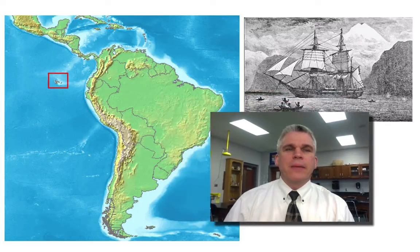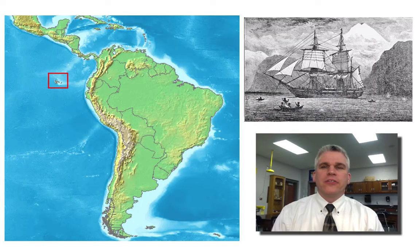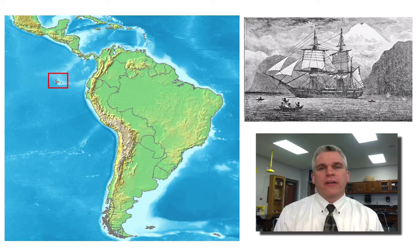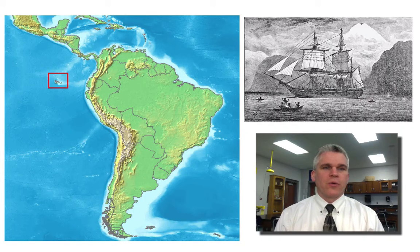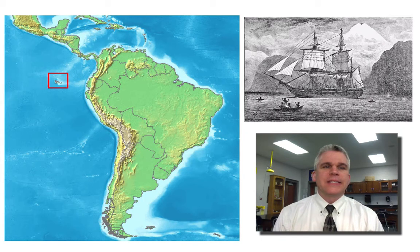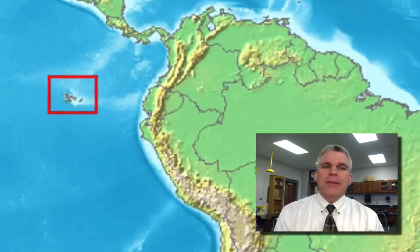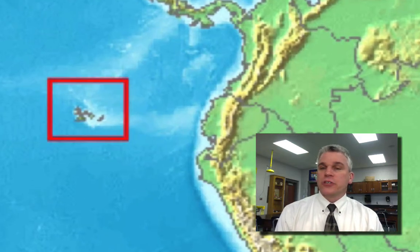Now, remember that Darwin traveled in this small little ship called the HMS Beagle on a five-year cruise around the world. And for a few weeks, he stopped off at the Galapagos Islands, which is right along the equator in the Pacific Ocean, just off the coast of South America.